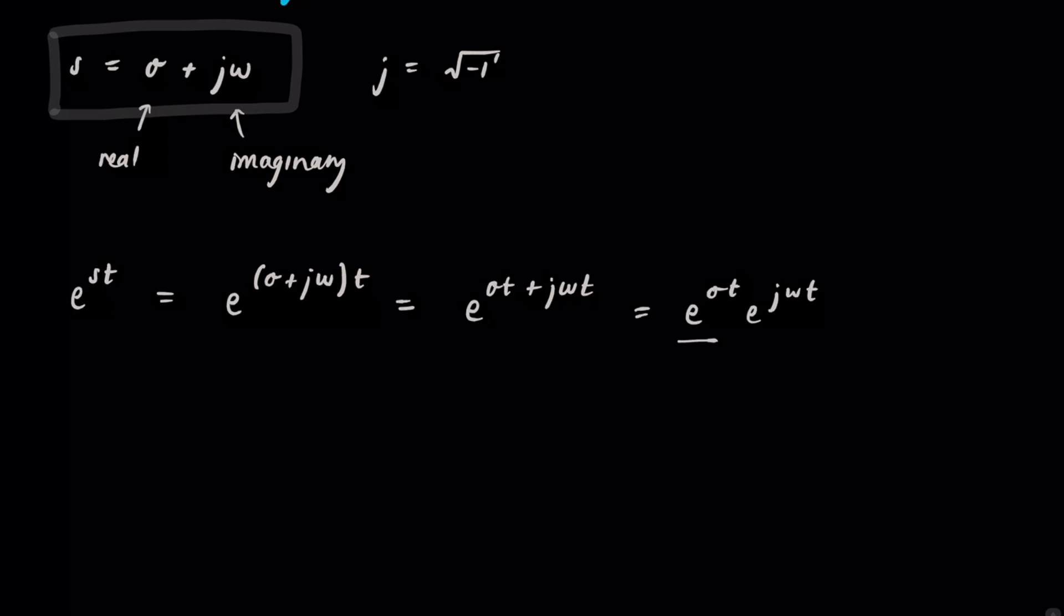So let's look at both of these terms here separately. So e to the sigma t, that just looks like a standard exponential graph. If sigma is actually less than zero, well let's just say sigma equals negative 1, then you're going to get a graph that looks like this. When t is zero, you're going to get one, and it's going to decay down.